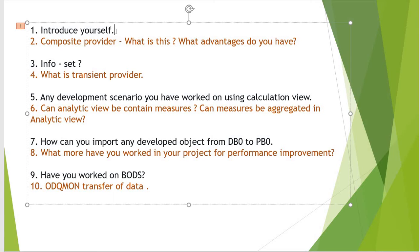The sixth question is: can an analytic view contain measures, or can measures be aggregated in an analytic view? There are three kinds of views — attribute view, analytic view, and calculation view. This question is specifically about analytic view. The answer is yes — we can put measures in an analytic view and they can also be aggregated.